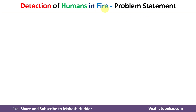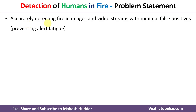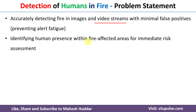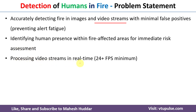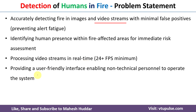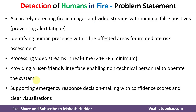The problem statement of the project: accurately detecting fire in images and video streams with minimal false positives; identifying human presence within fire-affected areas for immediate risk assessment; processing video streams in real time; providing a user-friendly interface enabling non-technical personnel to operate the system easily; supporting emergency response decision-making with confidence scores and clear visualizations.